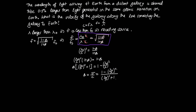Now let's find lambda-naught over lambda. We're told that the observed wavelength lambda is 0.5% longer than the one generated in the lab, so the lab wavelength is 100% and the observed is 100.5%. Therefore lambda-naught over lambda equals 100 over 100.5, which equals 0.995.